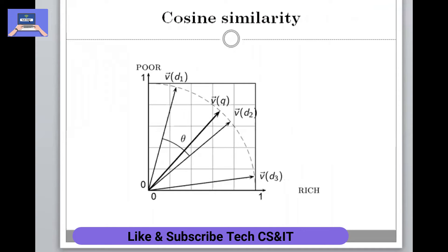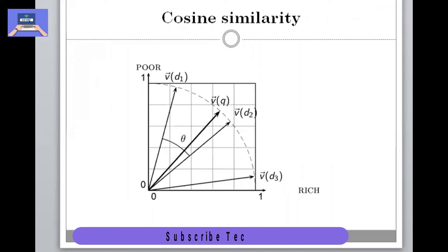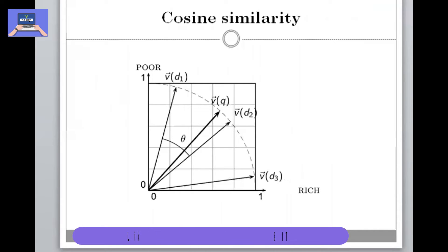To recap: if the cosine similarity value is near one, the document is relevant; if it is near minus one, the document's ranking similarity is poor and it will be ranked lower.